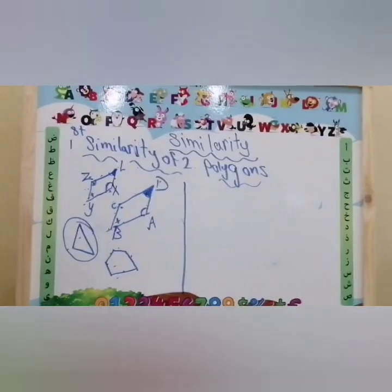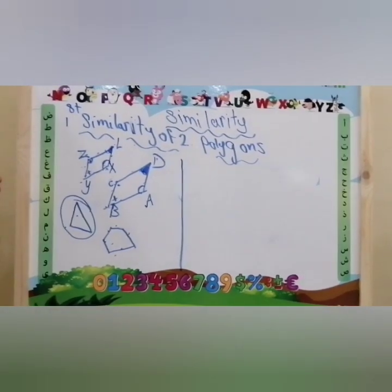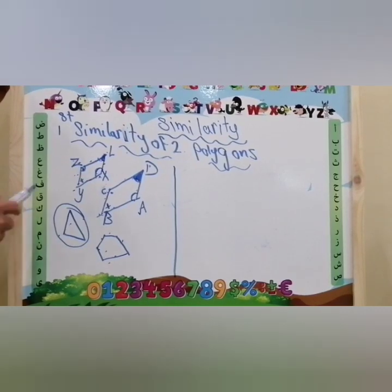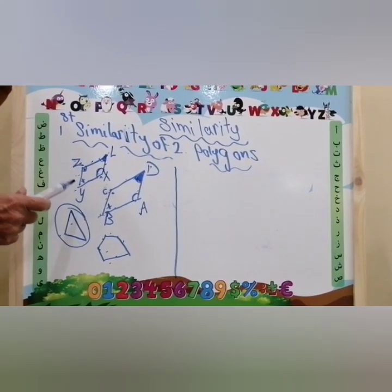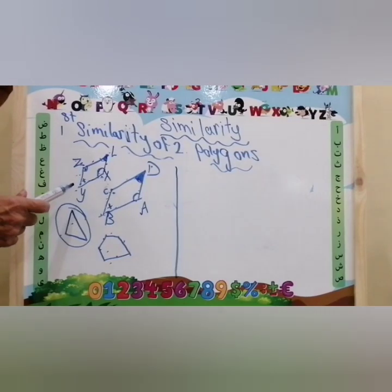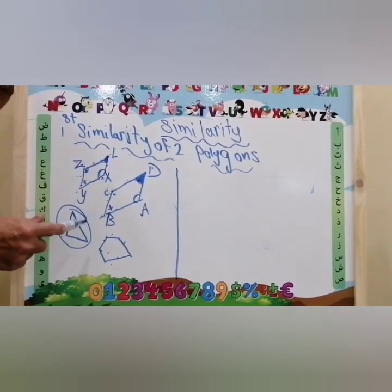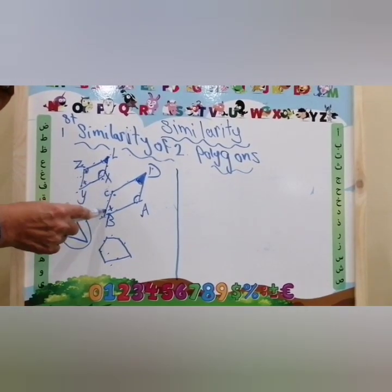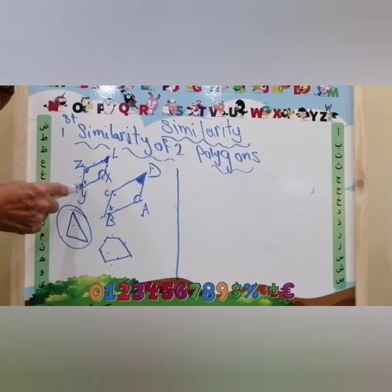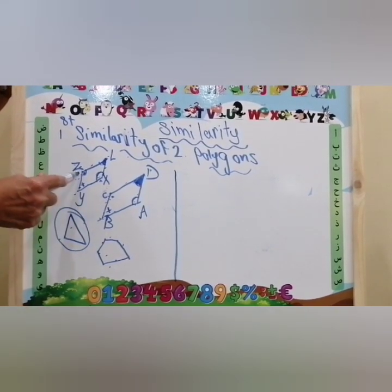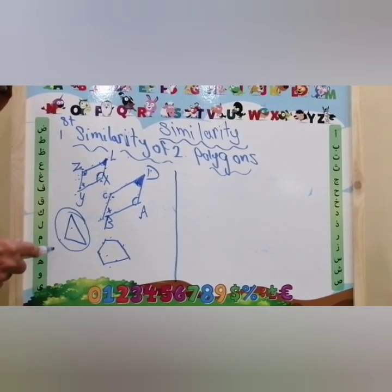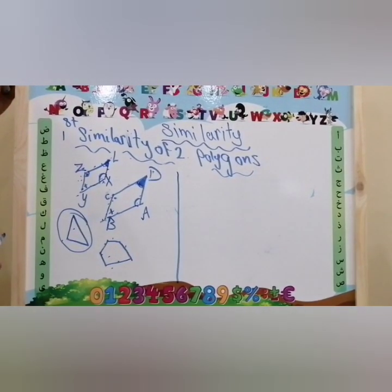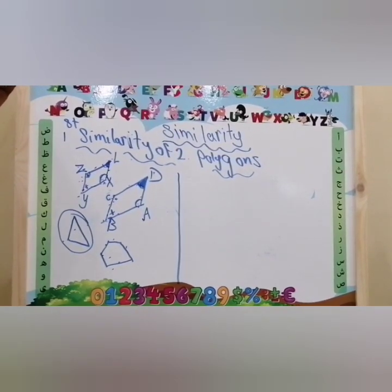What is the condition? Two polygons are similar if: number one, the corresponding angles are equal in measure. So measure angle A equals measure angle X, measure angle B equals measure angle Y, measure angle C equals measure angle Z, measure angle D equals measure angle L.